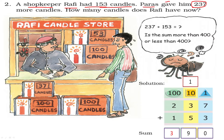At first it may seem like 'gave' means minus, but since he is getting extra 237 candles, you have to add. So 237 plus 153. Add and write the answer. How many candles does Rafi have now?